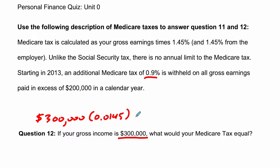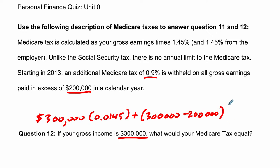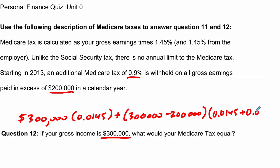So what that means is that in this case, we have $100,000 past $200,000. Our gross income is $300,000 minus $200,000, which is $100,000. That $100,000 is going to be taxed at an additional 0.9% on top of the 1.45%, so times 0.0145 plus 0.9%, which is 0.09.